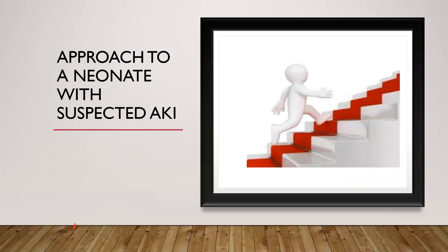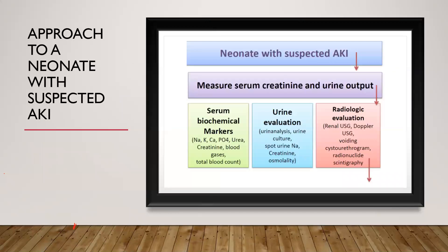Coming on to a neonate who has already developed or is suspected to have AKI: like in any neonate, history, examination, and assessment of fluid status are very important. On history, we want to find out if prenatal ultrasounds have been done, if the baby is receiving nephrotoxic drugs, any maternal exposure to ACE inhibitors or ARBs, perinatal asphyxia, prematurity, excessive fluid losses like diarrhea, and any family history of congenital nephrotic syndrome, cystic kidney diseases, or oligohydramnios.